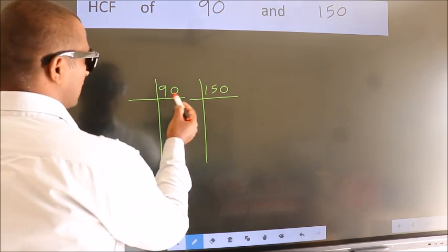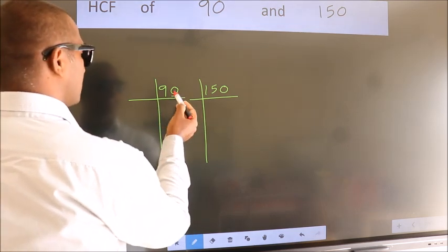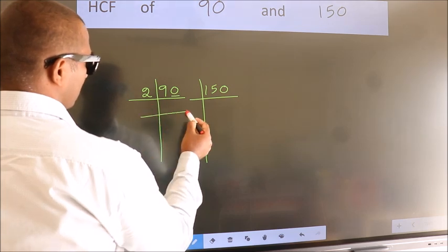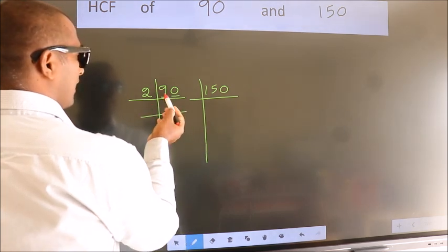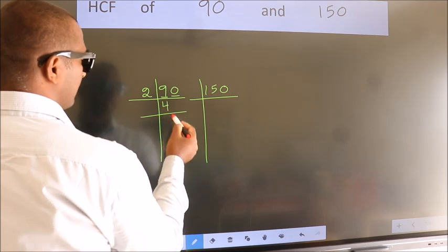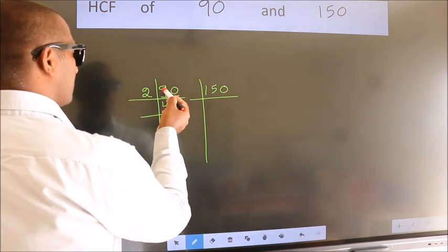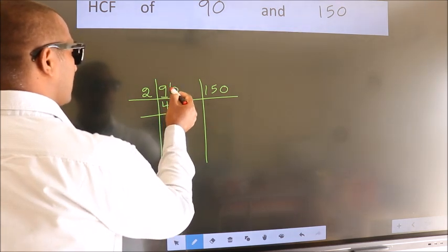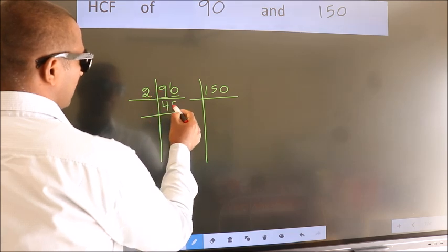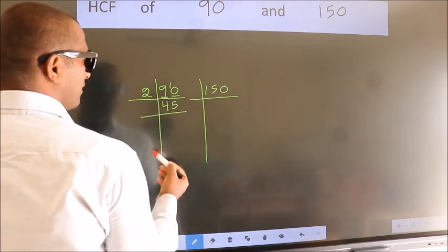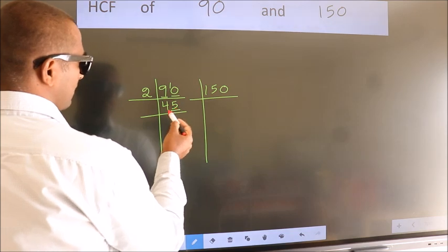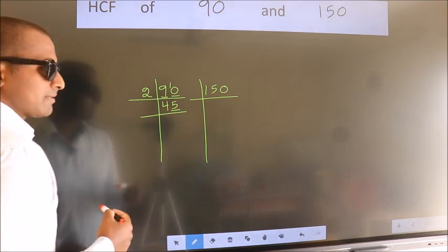For 90, the last digit is 0, so we take 2. The first number is 9. A number close to 9 in the 2 times table is 2 fours, 8. 9 minus 8 is 1, carried forward: 10. We get 10 in the 2 table as 2 fives 10. But the last digit is 5, which is not even, so this number is not divisible by 2.